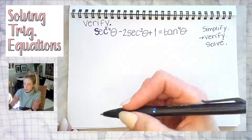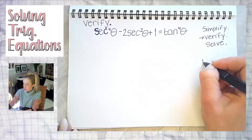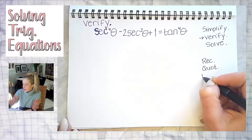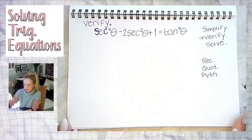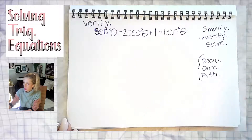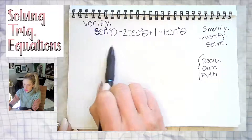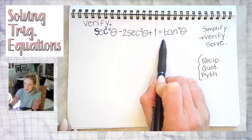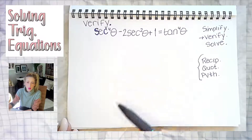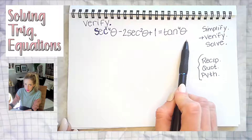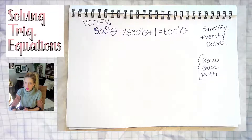If you're verifying a trig identity, you can use the fundamental identities, which include the reciprocal identities, the quotient identities, and the Pythagorean identities. We can use all of those. We want to verify that this is true — allegedly the left side of the equal sign is equivalent to the right side. If both sides are equivalent, we should be able to show that. That's what verify means. We are not moving anything from one side to the other.